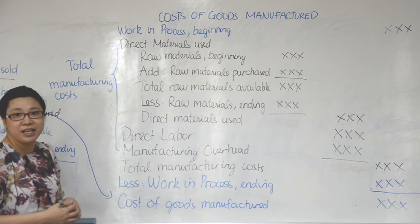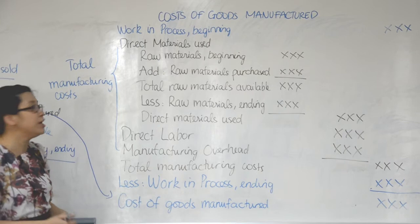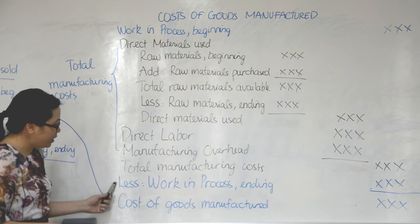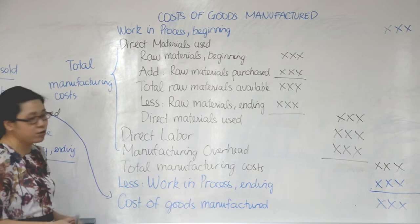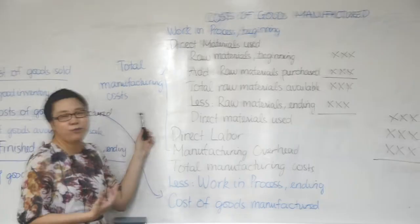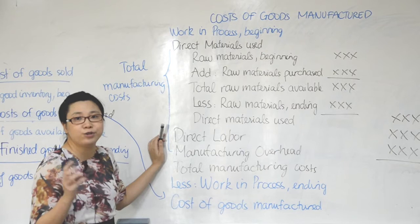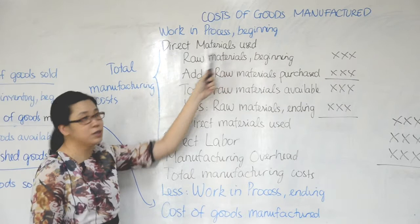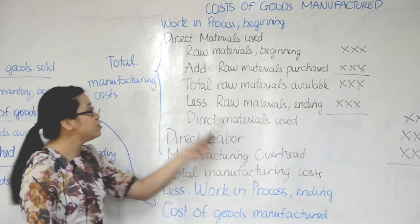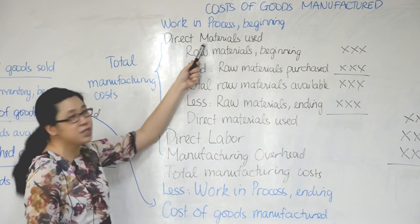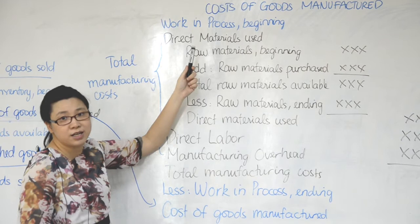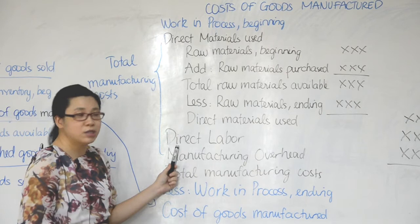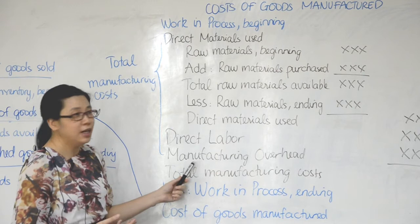So: work in process at the beginning, plus total manufacturing cost, minus work in process at the end, gives us cost of goods manufactured. Now, how can we find total manufacturing cost? The manufacturing cost includes three types: direct material used, direct labor, and manufacturing overhead. You add the cost of direct material used in the production process, plus direct labor, plus manufacturing overhead actually incurred, and that gives you total manufacturing cost.